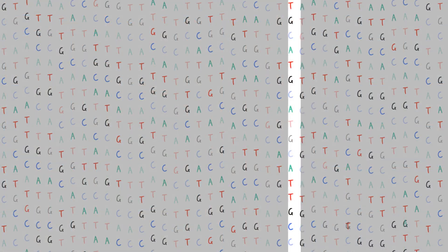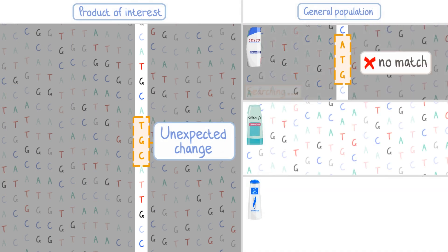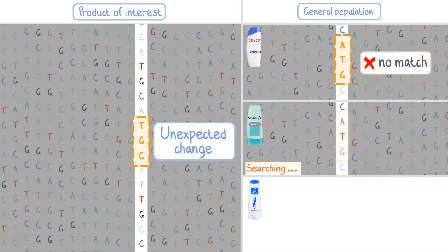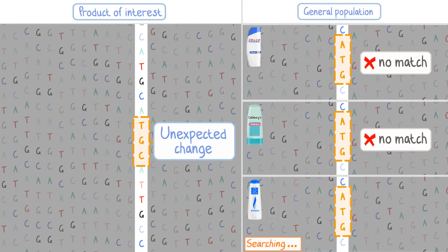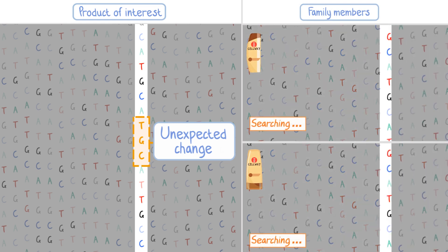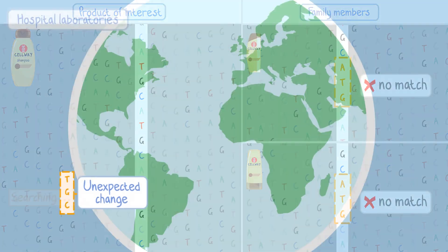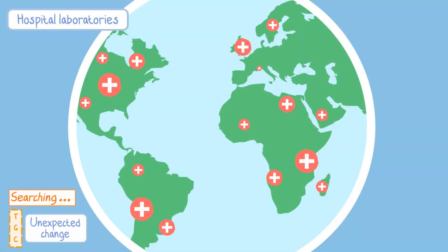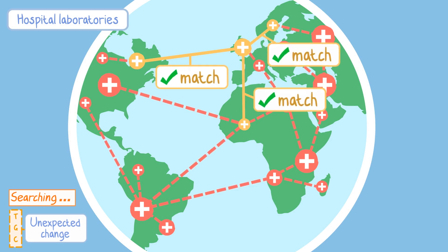However, as in this second example, if the scientist finds an unexpected change that doesn't match anyone else in the general population, they need to think about it a bit more. They'll study other members of the same family to see if any of them carry the same change. And if, as in this case, there's still no match,